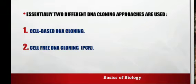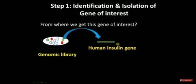Cell-based DNA cloning was the first form of DNA cloning to be developed and is an in vivo cloning method. The essence of cell-based DNA cloning involves these steps. Firstly, a DNA fragment containing the gene of interest — here it is a human insulin gene — is obtained from a donor cell, genomic library, or cDNA library.